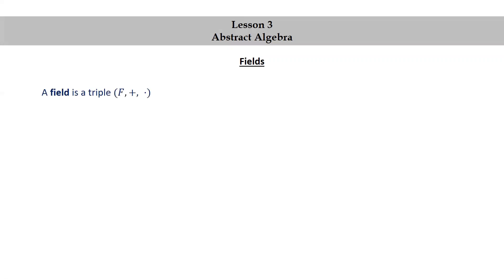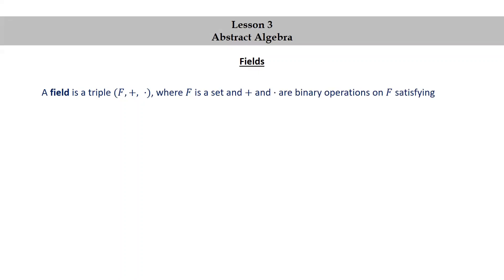Fields. A field is a triple (F, +, ×), where F is a set, and + and × are binary operations on F, satisfying several properties.